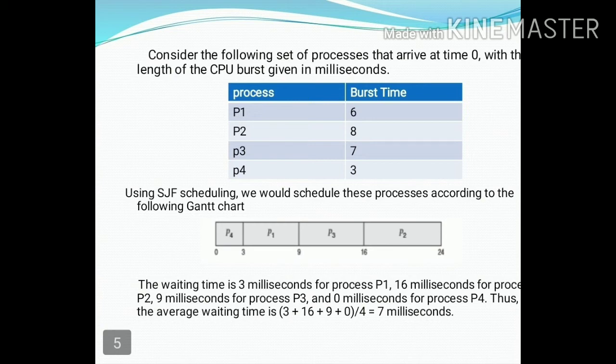There are four processes: P1, P2, P3, and P4. The CPU burst times are 6, 8, 7, and 3 ms respectively. All arrive at time zero. Using FCFS the order would be P1, P2, P3, P4. But with SJF, we select the lowest CPU burst time first, which is P4 with 3 ms.